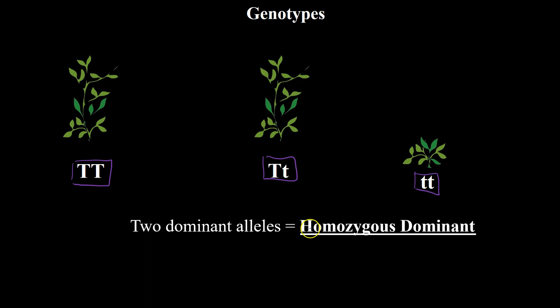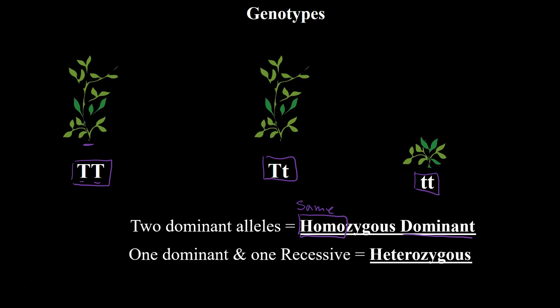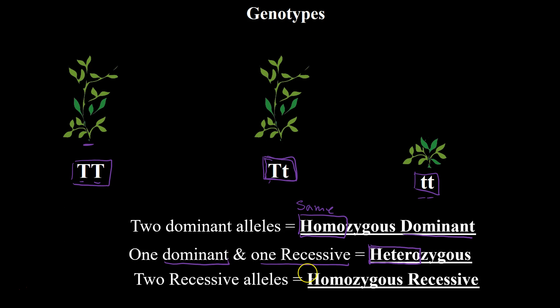Here's how we describe genotypes: if we have two dominant alleles, we call that homozygous dominant — the prefix 'homo' means the same. This plant has two dominant alleles, they're the same, so we call it homozygous dominant. A genotype where one allele is dominant and one is recessive is called heterozygous — the prefix 'hetero' means other or different. So a dominant T and recessive t is heterozygous. If there are two recessive alleles, both the same, we call that homozygous recessive.